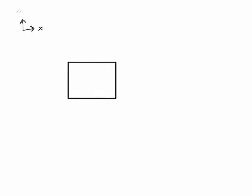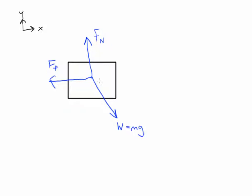Here's our free body diagram. We represent the object by a rectangle. The x axis points along the slope and the y axis points perpendicular to the slope. The normal force points straight up (perpendicular to the surface). The frictional force points up the slope along the x axis. The weight points off at an angle in this coordinate system — weight equals mass times gravity — and the angle it points off at equals the slope angle theta. So the component of weight along the y direction is w cosine theta, and along the x direction it is w sine theta.